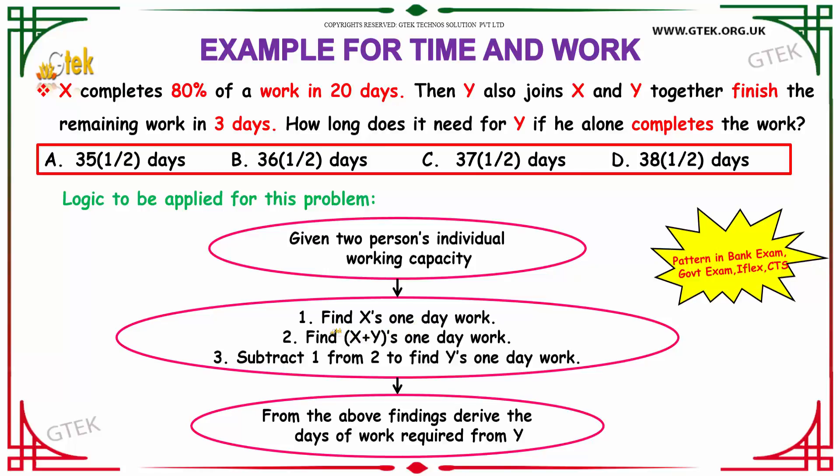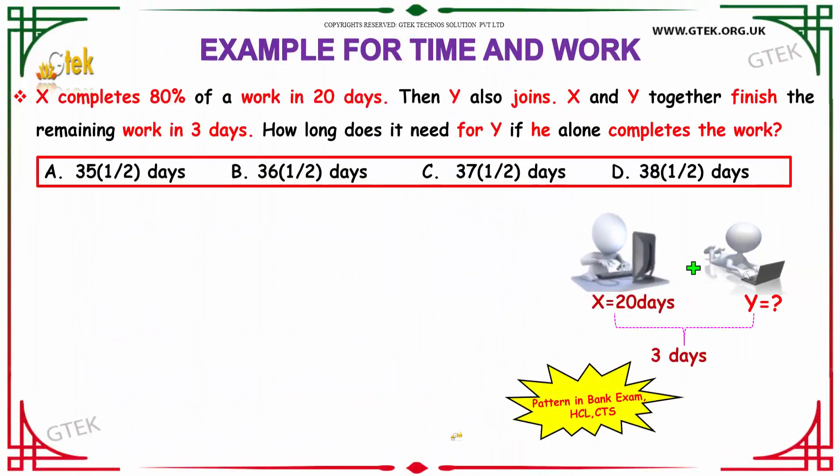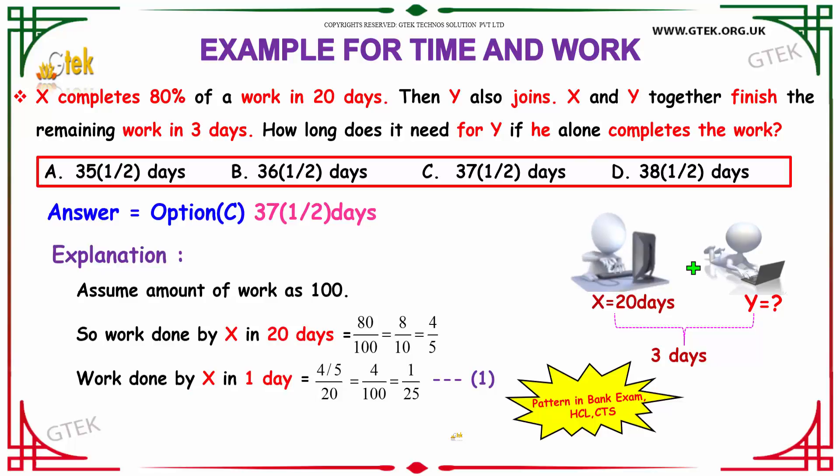You have to find X one day work from 20 days. Then, we have to find X plus Y's one day work that is for 3 days. And subtract X one day work from X plus Y's one day work. That gives you the one day work that Y has done. So, from the above findings, we can derive the days of work required from Y.